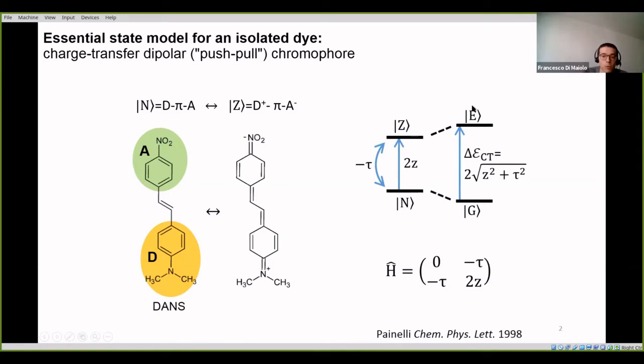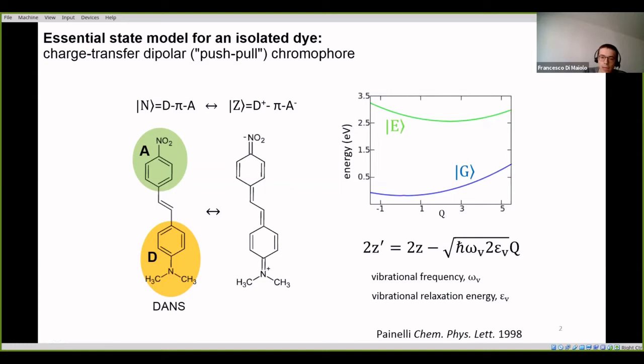Since the electronic problem is so simple, you can think to account for the nuclei. And we do this, again, in a simple way, accounting for one effective molecular coordinate, this capital Q. So, this capital Q will modulate the two-z separation energy. What you can do is to then diagonalize the electron nuclear Hamiltonian for different values of this Q coordinate. So, you adopt the adiabatic approximation, and you get these two potential energy curves, for the ground state and the excited state.